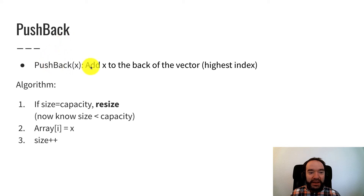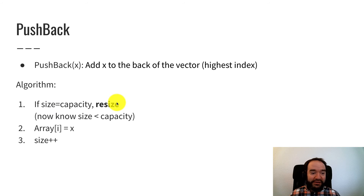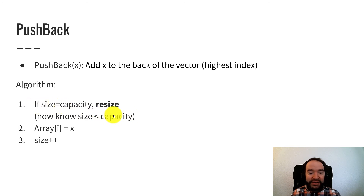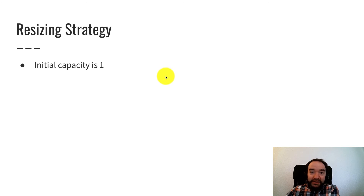The complicated operation is pushback because it might have to do resizing. Pushback is responsible for adding x to the back of the vector. Here's the algorithm: first, if size is currently equal to capacity, resize — meaning if the vector is currently full, make room. After this step, we know size is strictly less than capacity. Either the resize increased capacity, or size was already less than capacity. Either way, there is room for element x. Then we do array at index size equals x to assign it, and size++, to track that there's one more element.